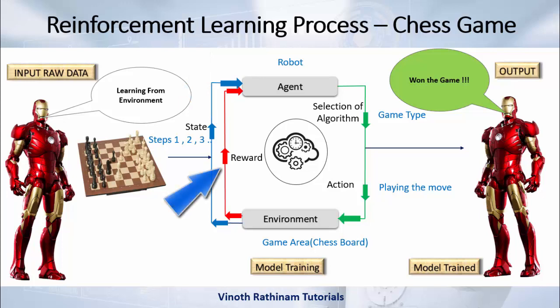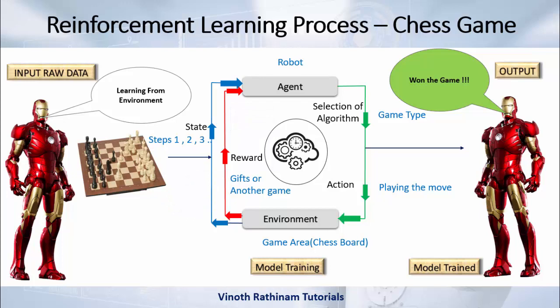During the game, whenever the robot wins an opponent's piece it gets a reward point — a positive value, for example plus 10 points. Whenever it loses its own pieces it gets a penalty — a negative value, for example minus 10 — and these values keep accumulating. At the end the robot loses to the world champion. Now the robot adds all the knowledge — the moves it made — to the algorithm. When it plays the second time it won't repeat the same mistake. Like this it plays many games, making the algorithm think like a human, and surely at one point of time the robot will defeat the world champion. This is called the reinforcement learning process.